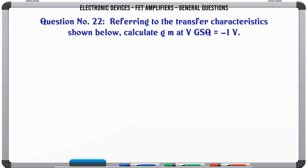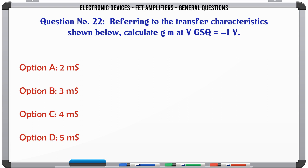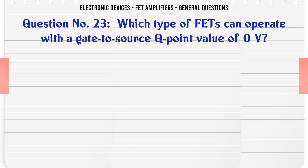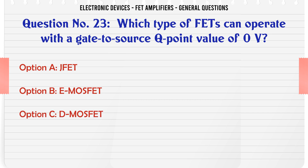Referring to the transfer characteristics shown below, calculate GM at VGSQ = 1V. A. 2mS. B. 3mS. C. 4mS. D. 5mS. The correct answer is 3mS.